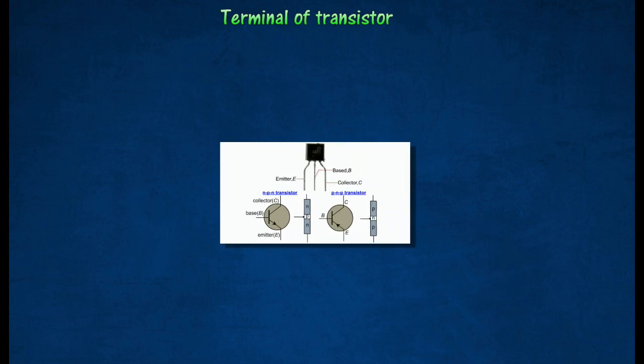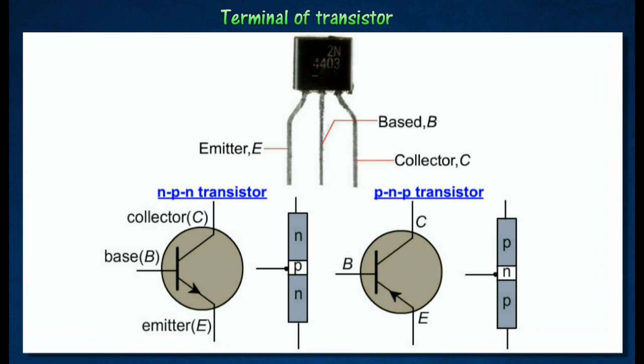The transistor is a three-terminal device consisting of the base B, collector C and emitter E. The emitter supplies charge carriers to the collector.